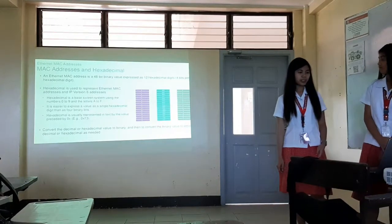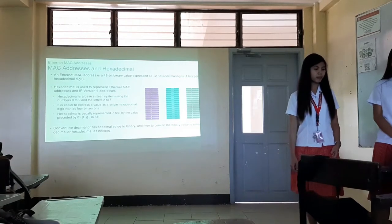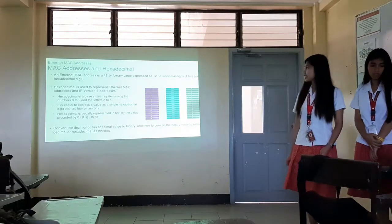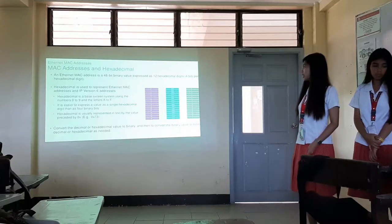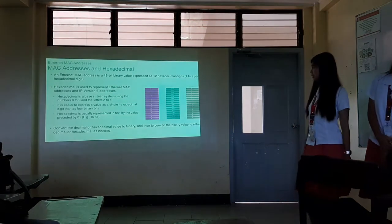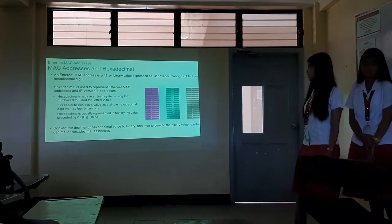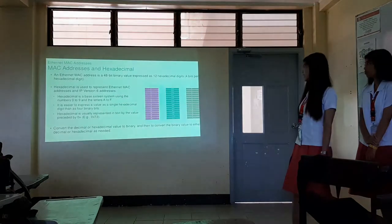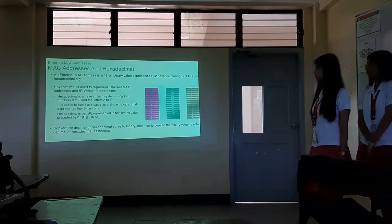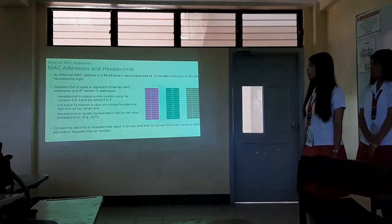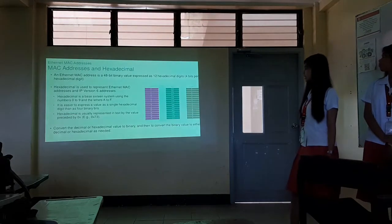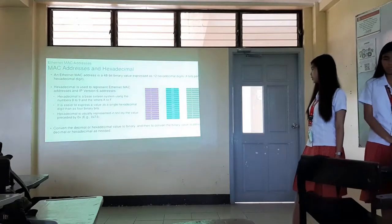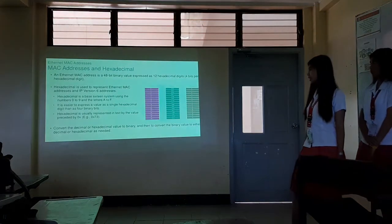MAC addresses and hexadecimal: an Ethernet MAC address is a 48-bit binary value expressed as 12 hexadecimal digits, with 4 bits per hexadecimal digit. Hexadecimal is used to represent Ethernet MAC addresses and IPv6 addresses. Hexadecimal uses numbers 0 to 9 and letters A through F. Hexadecimal is visually represented in text with a value preceded by 0x, for example 0x73. You can convert decimal or hexadecimal values to binary, then convert the binary values back to decimal or hexadecimal as needed.